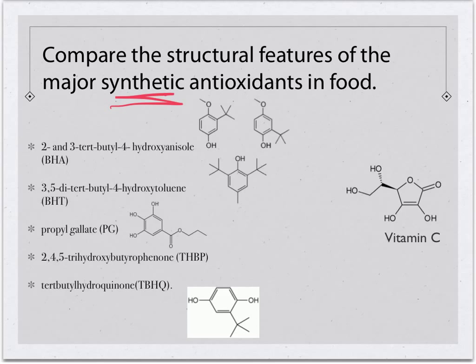We want to be able to identify synthetic antioxidants. BHA is right here, we have BHT, PG, 2,4-trihydroxybutyrophenone, and tert-butylhydroquinone. Looking at their basic structures, what can we generalize about all of them?